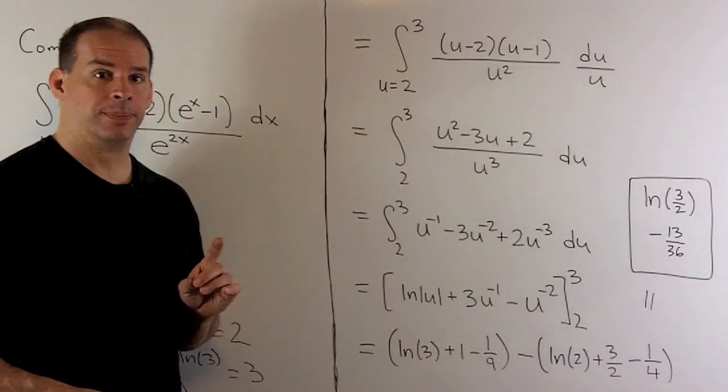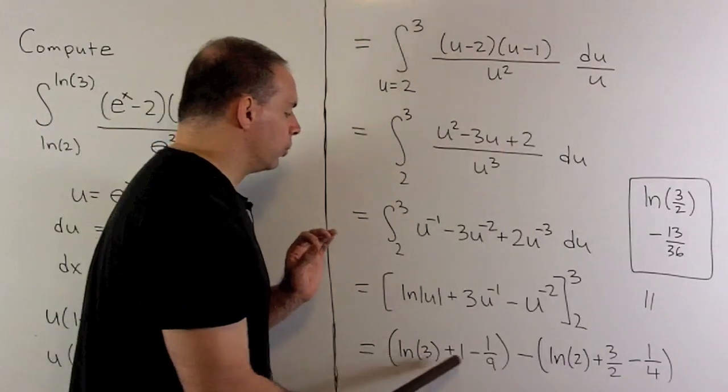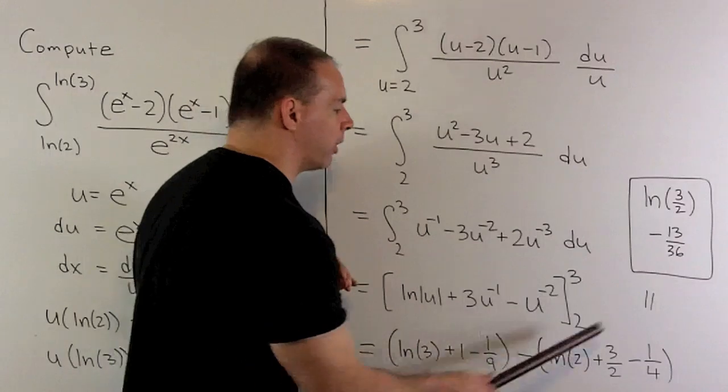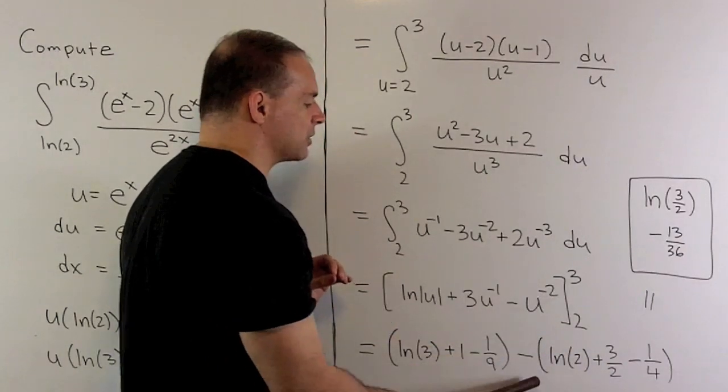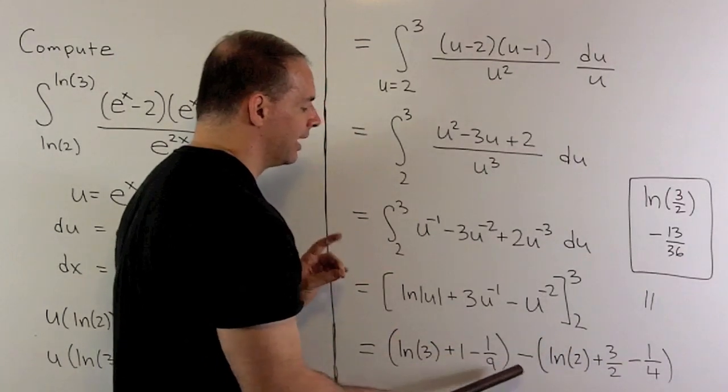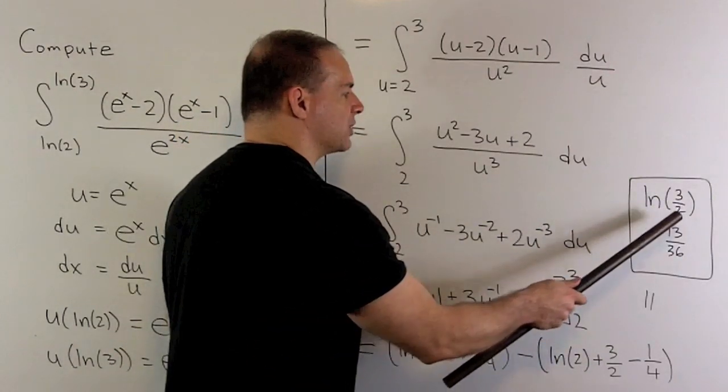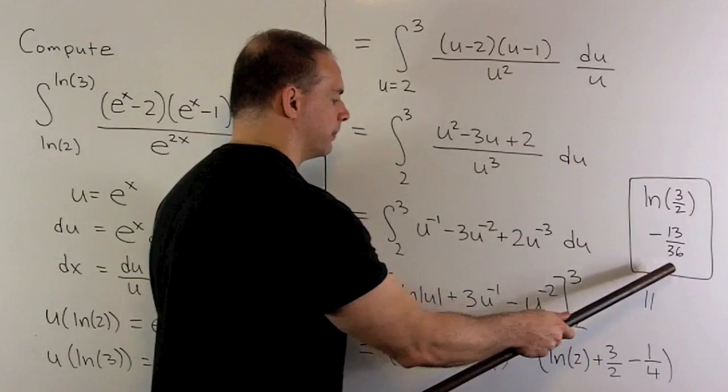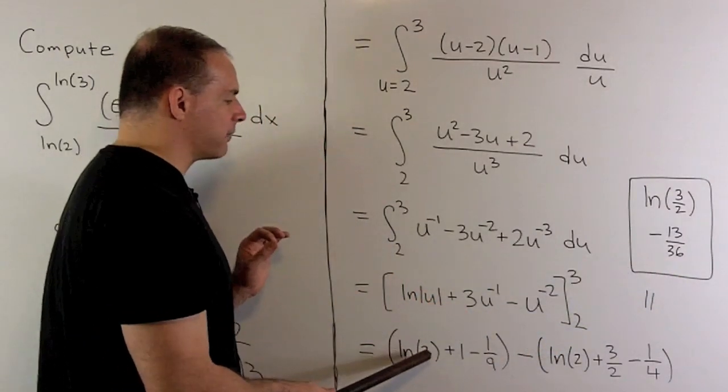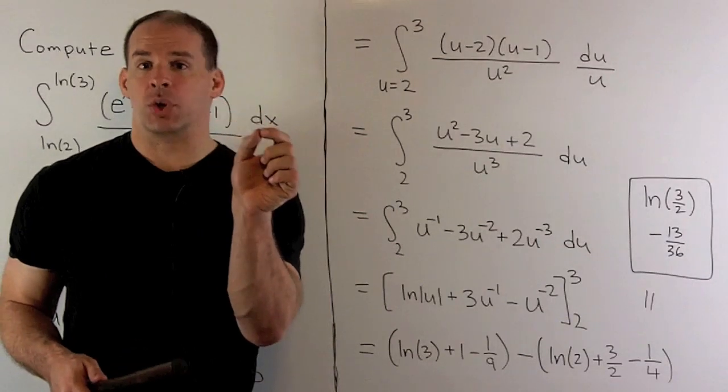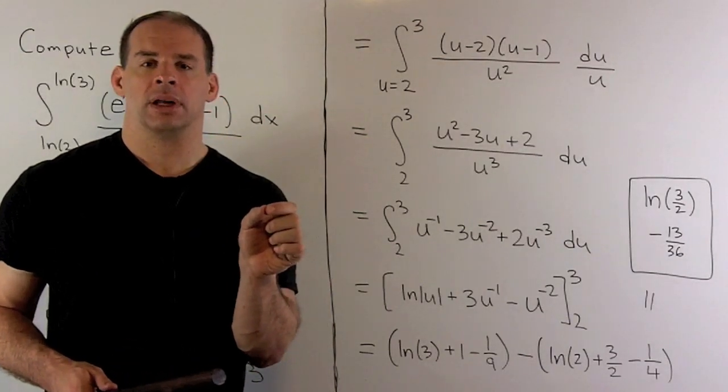Take the difference. So, we evaluate. We get these two terms. I make sure I use my parentheses so we distribute this minus sign correctly. Then when I simplify, what comes out is going to be natural log 3 over 2 minus 13 over 36. So that's the natural log of 3 minus natural log of 2. We could bring that to the inside as a quotient.